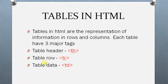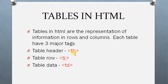For creating tables in HTML, you are in need of these three tags: th, tr, and td. th represents table header, tr represents table row, and td represents table data.